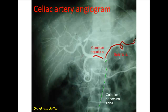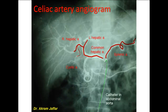The common hepatic artery continues as the proper hepatic artery. The proper hepatic artery divides into a left hepatic and a right hepatic branch. You can see here that the right hepatic artery provides a small branch — the cystic artery — that supplies the gallbladder.